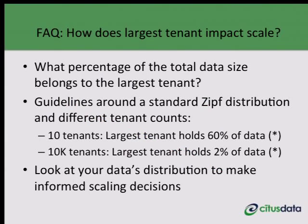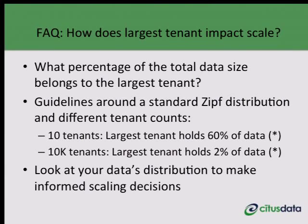The Zipf distribution helps in the following way. When migrating your single machine PostgreSQL database, an important question is: what percentage of total data does the largest tenant hold? If you have 100 tenants and the largest holds only 10% of the data, this approach will help you scale by 10x. Assuming a standard Zipf distribution, where you have 10 tenants your largest tenant roughly holds about 60% of the data. Where you have 10,000 tenants, your most popular tenant will hold about 2–3% of the data, meaning you'll be able to scale to 50x of where you are today. With that, I'll hand it over to Lucas.